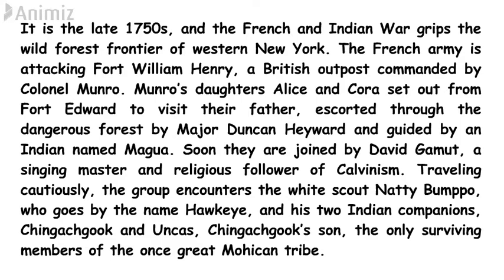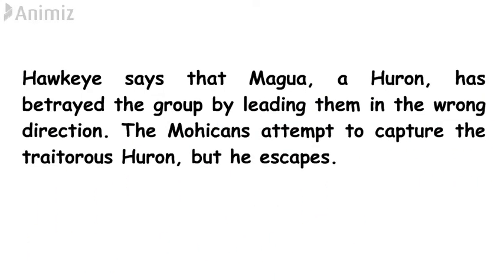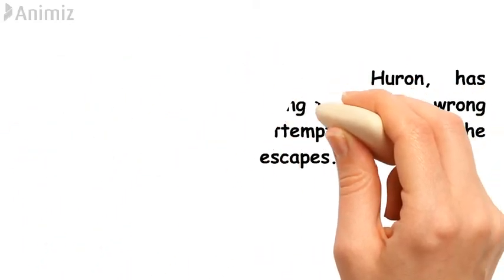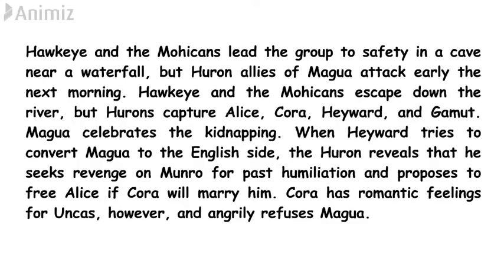The group was being led by Magwa, head of the Huron tribe, who had malicious intentions and a feeling of vengeance against Colonel Munro. He was misguiding the entire group. This was exposed by the white scout Natty Bumpo — Hawkeye — and his two Indian companions, Chingachgook and Uncas. Hawkeye exposes Magwa's treachery, but before they could capture him, Magwa fled. The Mohicans and Hawkeye then escorted the group to a nearby waterfall.